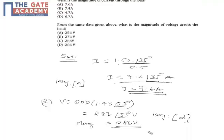The current is 1.52 divided by 0.2, which equals 7.6 at angle 35 degrees. The amplitude is 7.6, so the correct option is A.